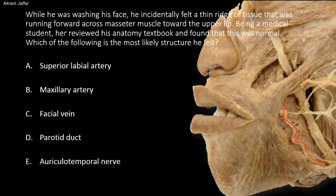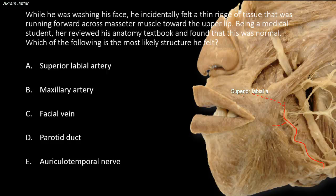As you can see here, the facial artery has a tortuous course on the face toward the medial angle of the eye. It passes deep to the sheet of dilator muscles of the mouth, and it gives off inferior and superior labial branches. These branches run deep to the facial muscles and supply the upper and lower lip. The superior labial artery thus lies more anterior to the masseter, at a different location from where the thin ridge was felt by the medical student, so the first option is wrong.